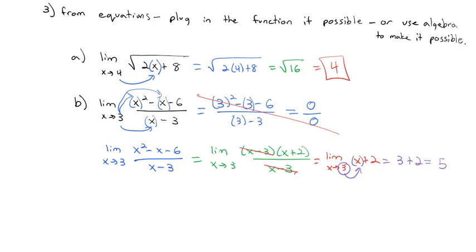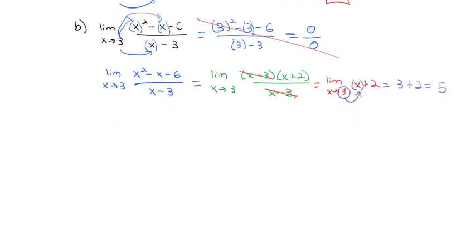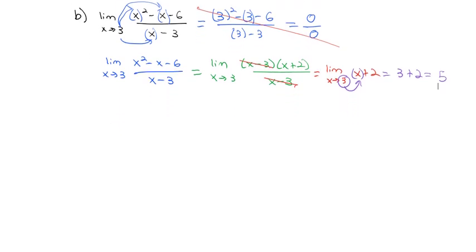What we can do is remove that problem point or undefined point by doing some algebra — in this case, we factored. In another case, we can try a different idea: the limit as x goes to 9 of (√x-3)/(x-9). Notice if we plug 9 in, the denominator becomes 0 and we get 0/0 with the numerator as well.